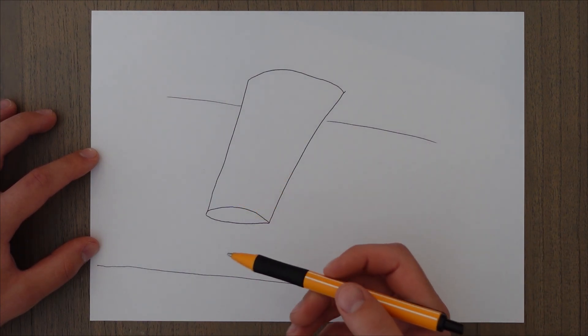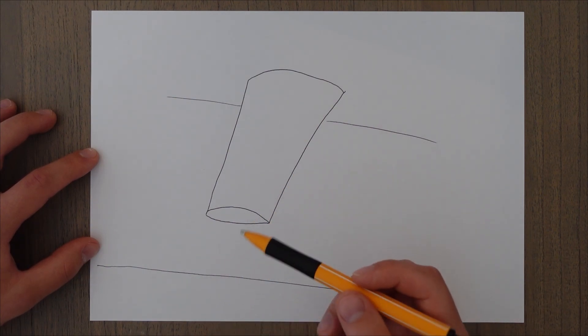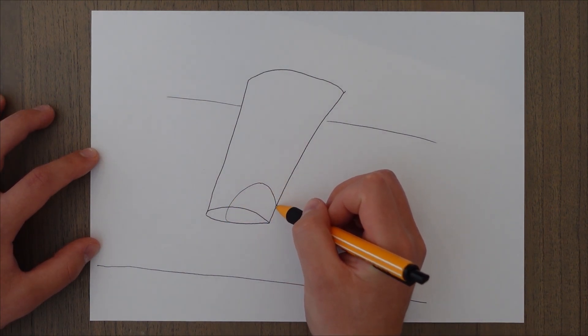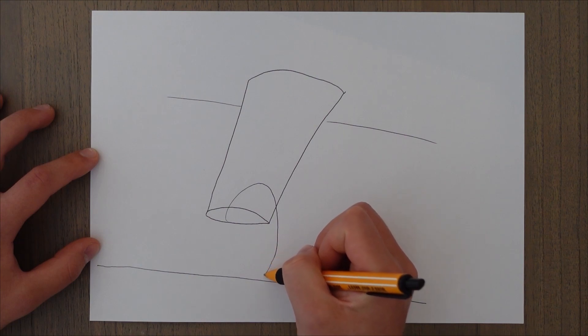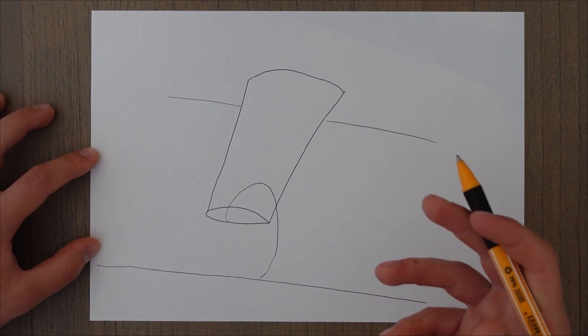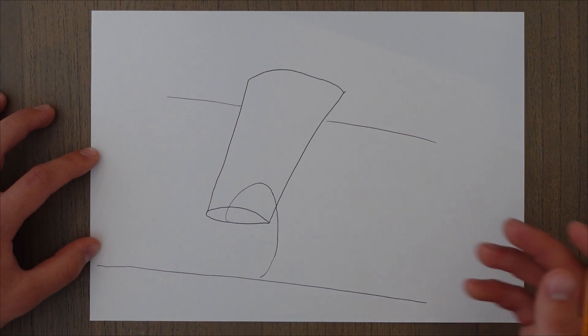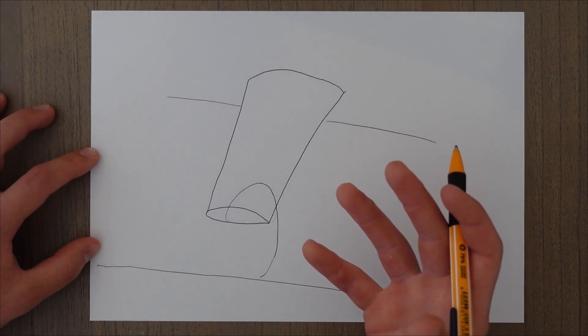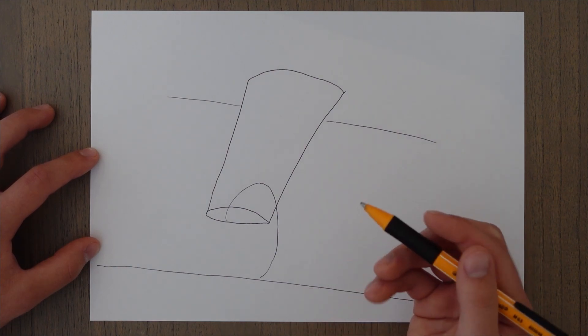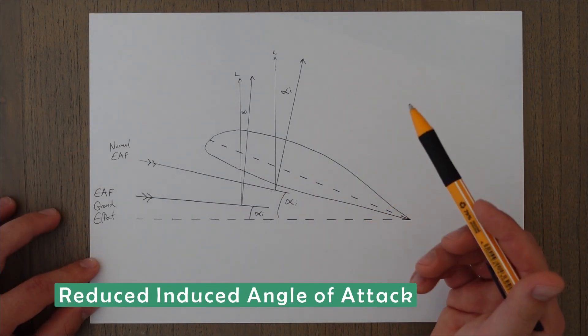The second component of Ground Effect is the reduction in strength of the wingtip vortices and a reduction, therefore, of the downwash over the wing. So when close to the ground, the wingtip vortices come off the wingtip and they physically hit the ground as they come around. This means that they aren't able to flow freely as there's this physical barrier in the way. It essentially acts the same way as a winglet does, and it blocks the air from correcting the pressure differential, and therefore, this reduces the strength of them as a result.